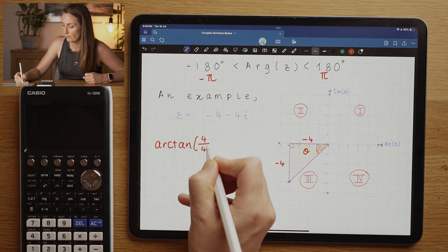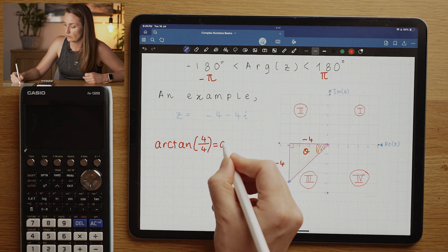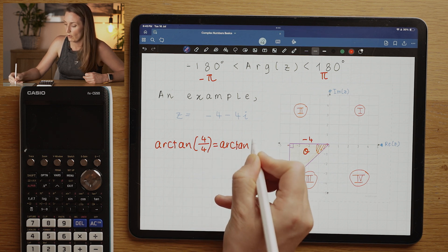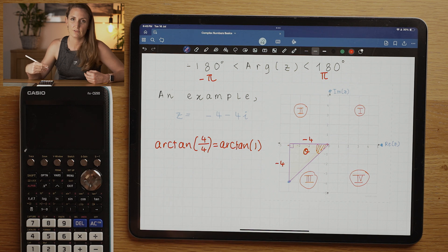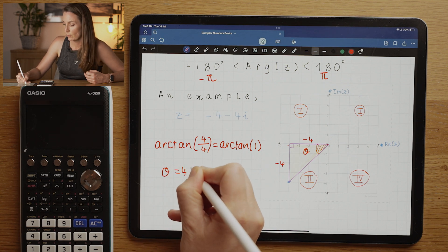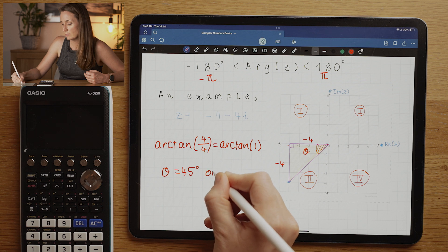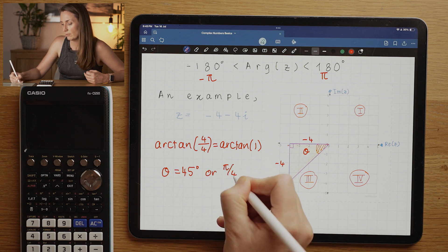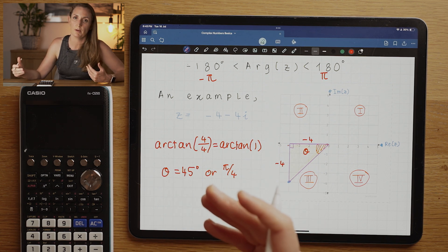I would need to do arctan of four divided by four, which is equal to arctan of one. That's an exact value, that's 45 degrees, or in radians π over four.